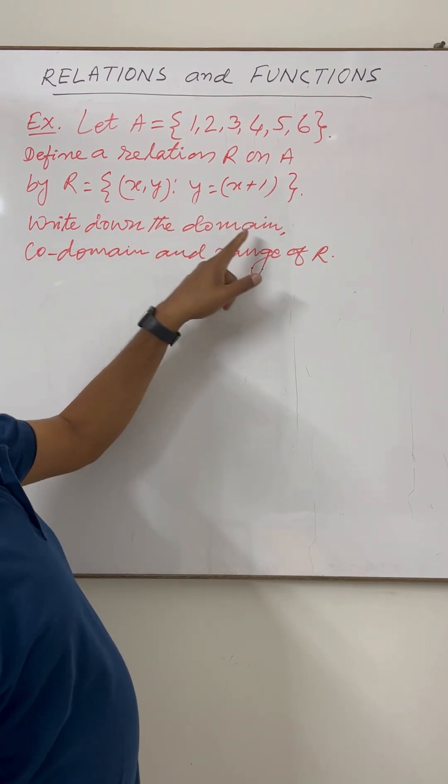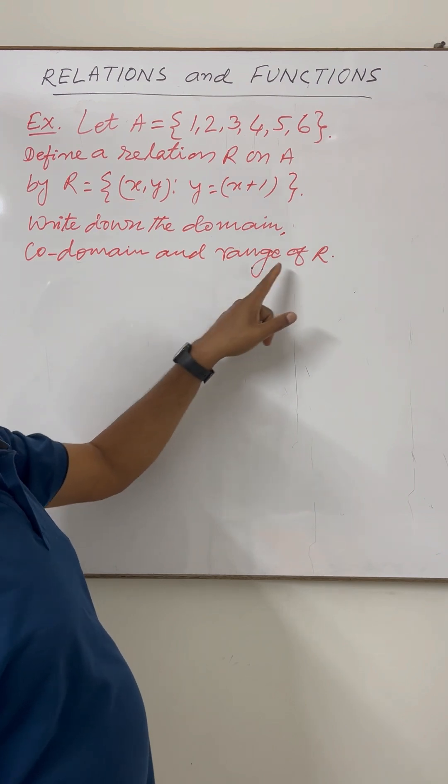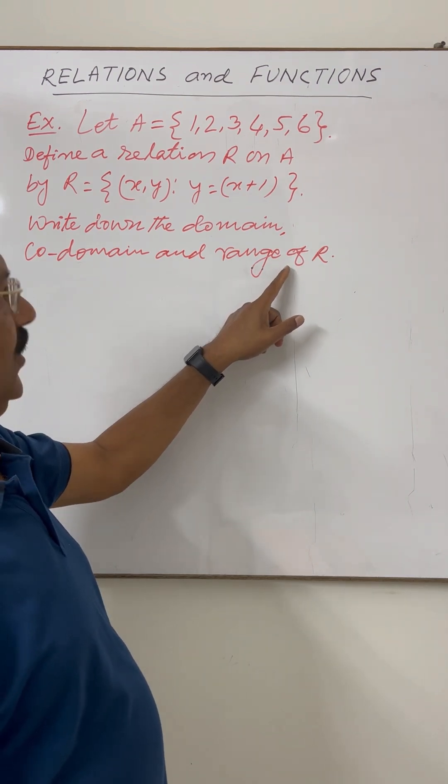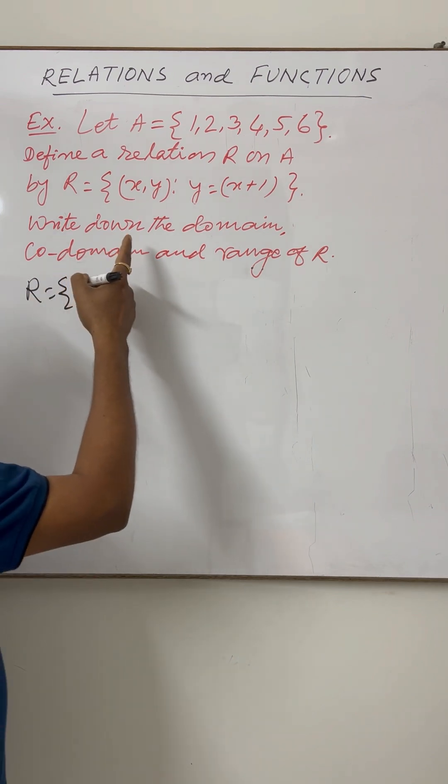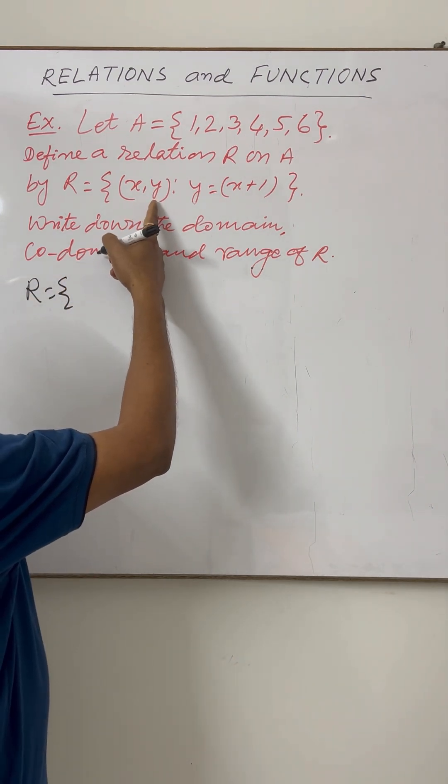We have to write down the domain, co-domain and range of this relation R. So relation R will consist of ordered pairs (x, y) such that the second element y is one more than the first element.